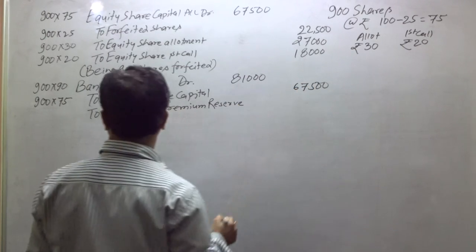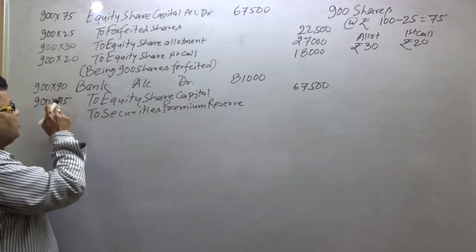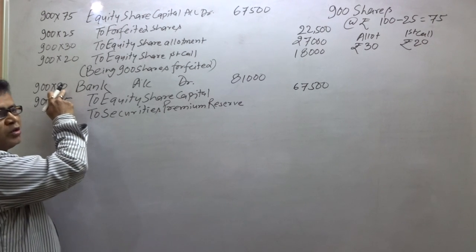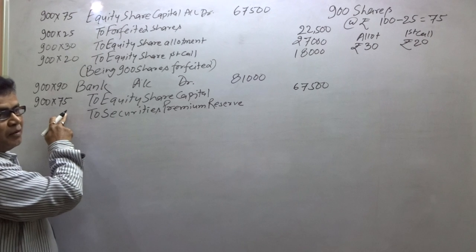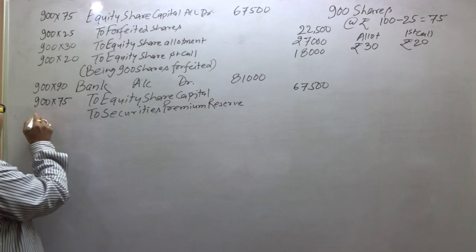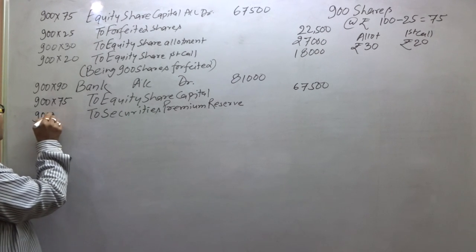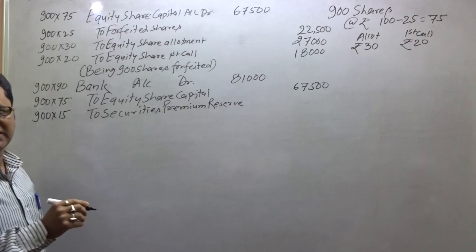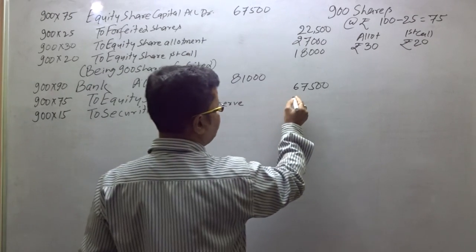Now see — the company reissued at ₹90, the paid-up value is ₹75. So the extra amount is ₹90 minus ₹75 equals ₹15. This goes to the Securities Premium Reserve. So 900 into 15 equals ₹13,500 goes to the securities premium reserve account.